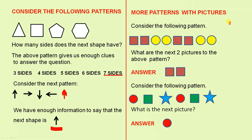More patterns with pictures. Consider the following pattern. What are the next two pictures to the above pattern? Two squares, two circles. Two squares, two circles. So we must have two squares. So that's the answer.